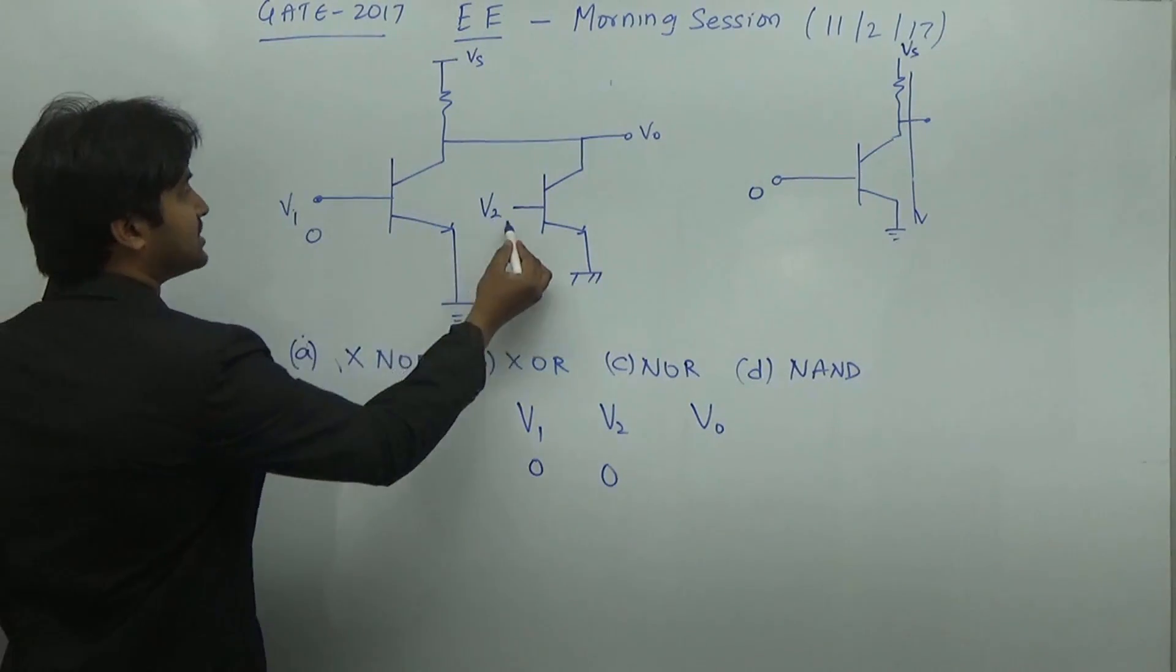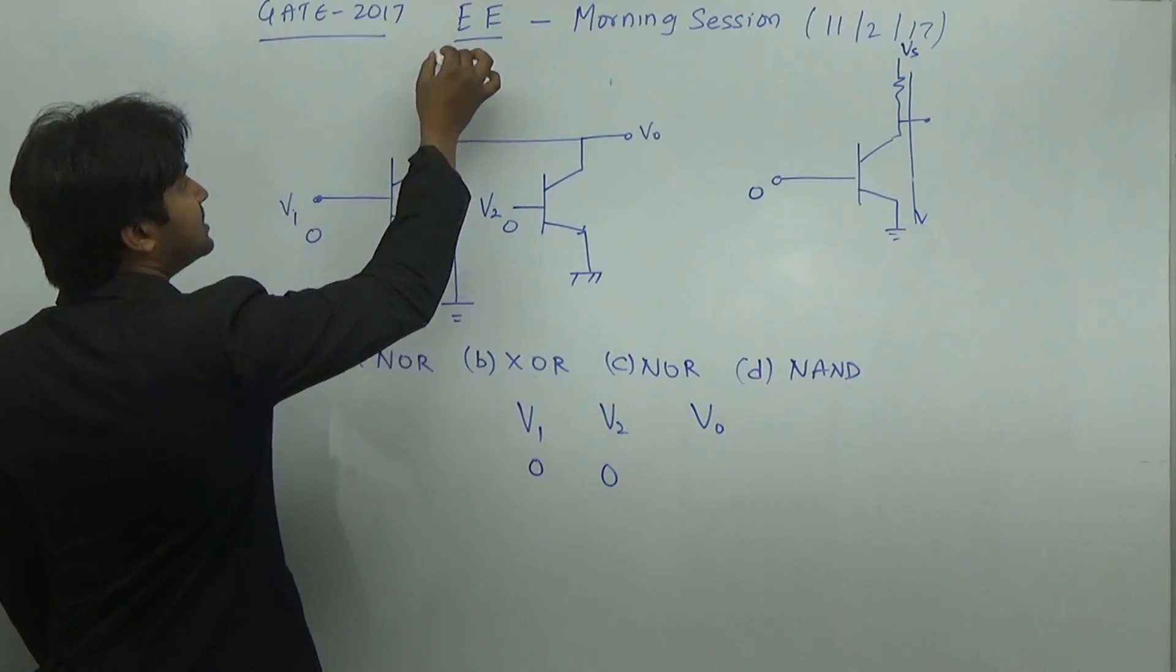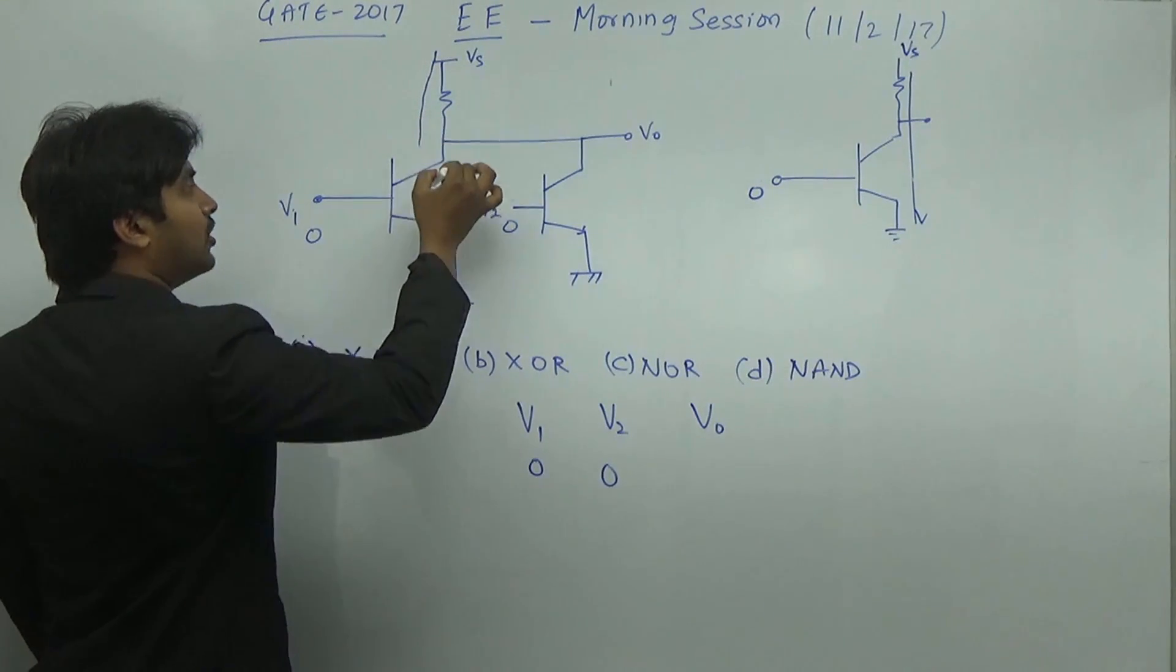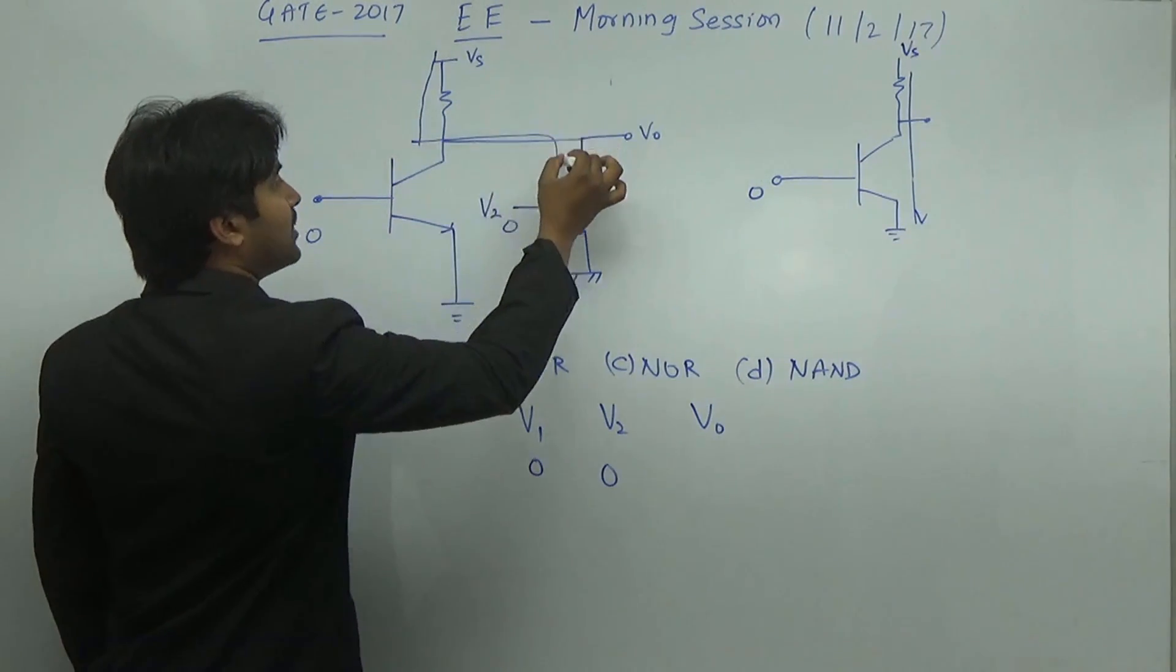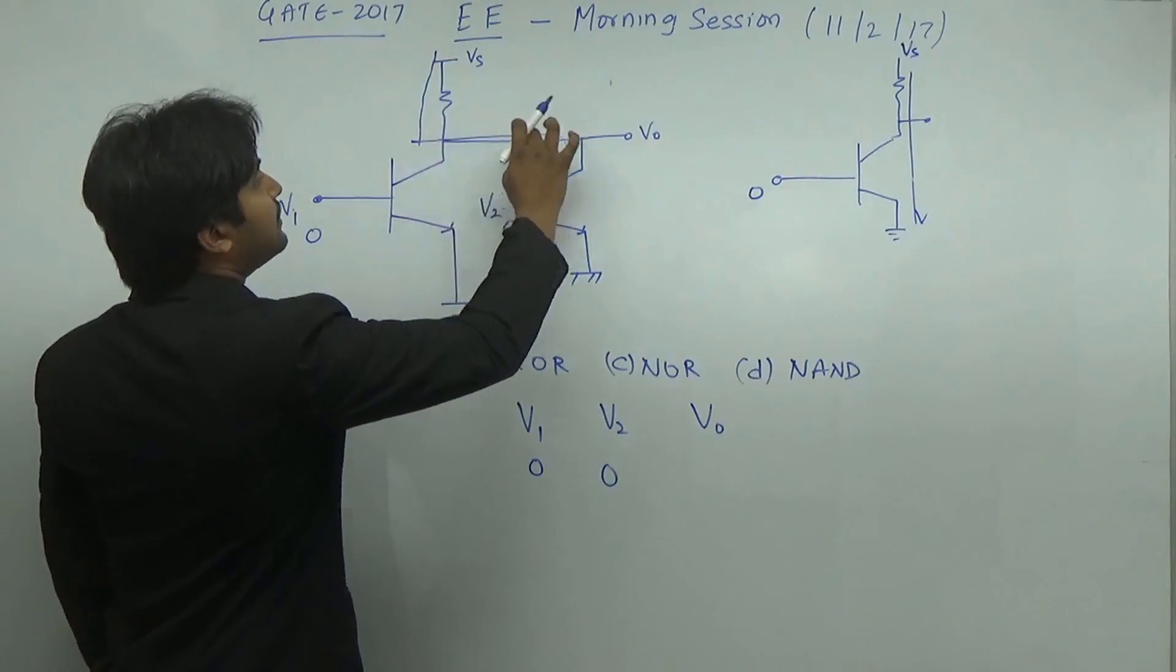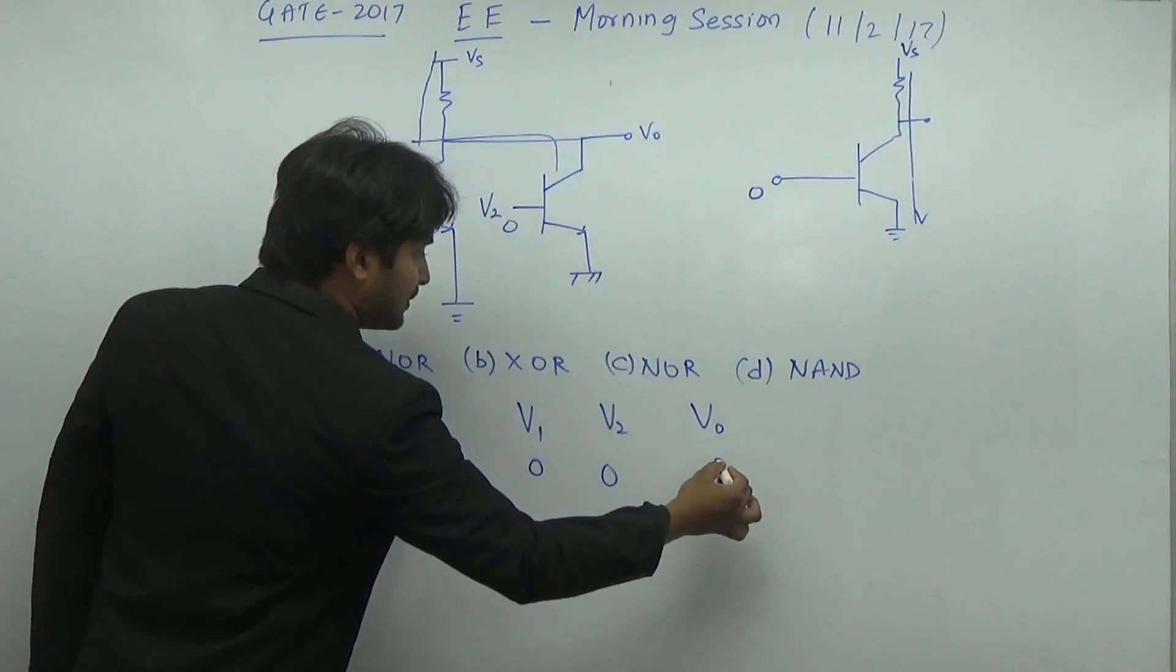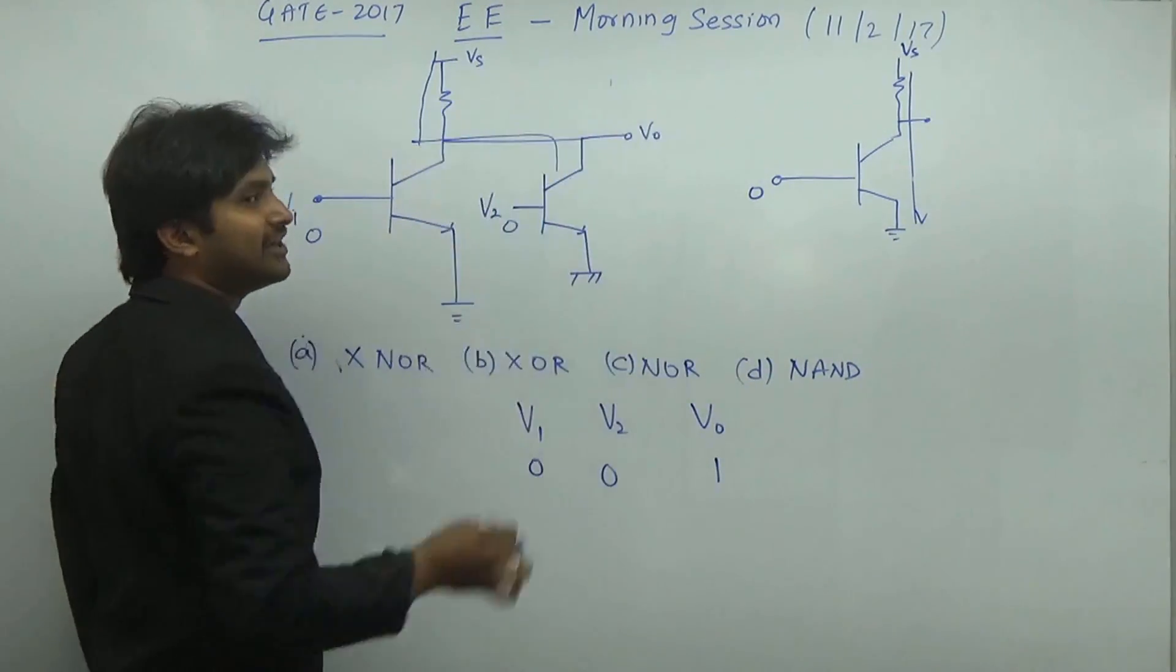If both my inputs are 0 and 0, both are in off state. The voltage flowing through here cannot flow inside either BJT. In that case, the total voltage will be available here. Because both the BJTs are open circuit, the output voltage will be equal to 1.